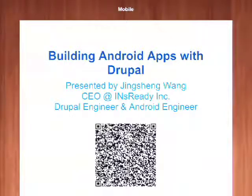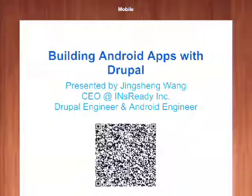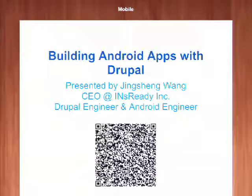My name is Jing Shen Wang. I'm running a Drupal and Android shop in Shanghai, China. This session is building Android apps with Drupal. Some people might also know me because my previous startup was doing a beer website, and we also created a beer cloud iPhone and Android application based on Drupal.